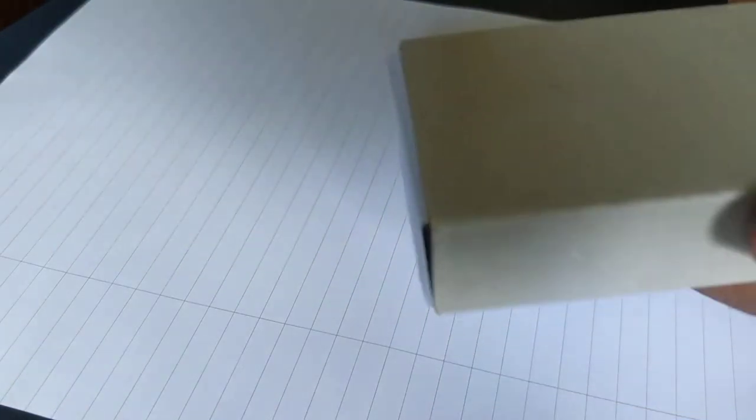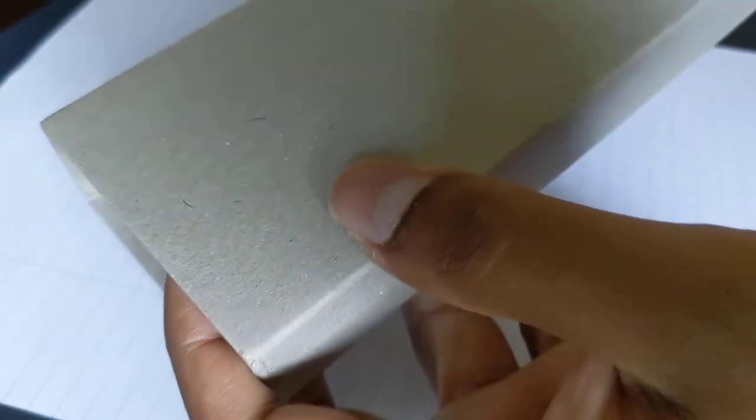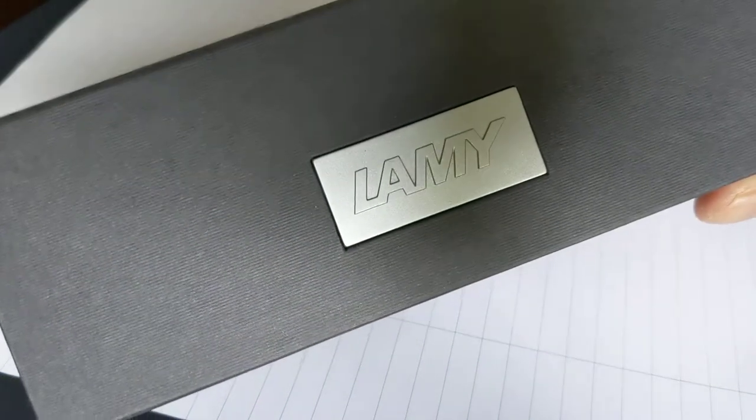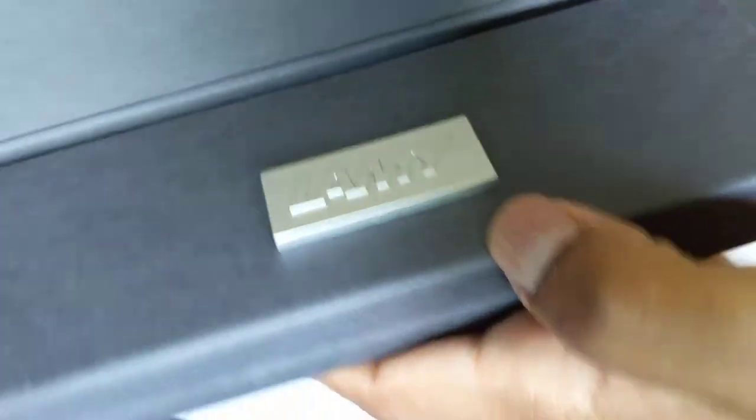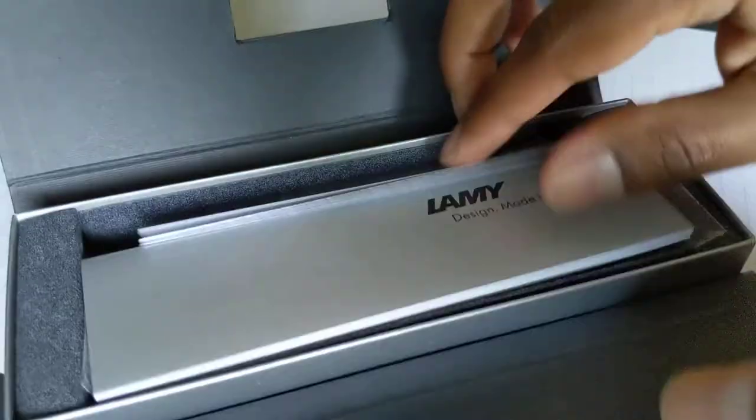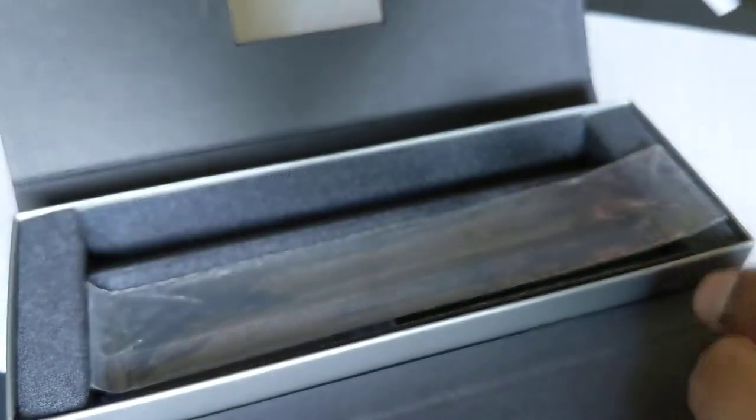Here is the packaging of the pen. The packaging came in the standard Lamy cardboard box. The Lamy 2000 actually comes in this same box here. It opens up like this, and then inside you've got a warranty policy and a brochure of Lamy's other products.